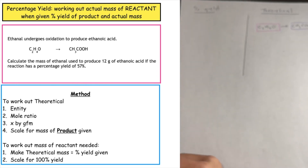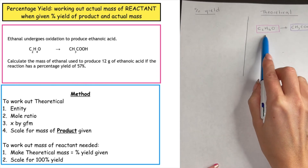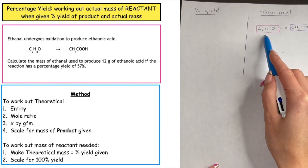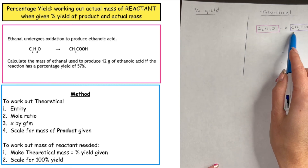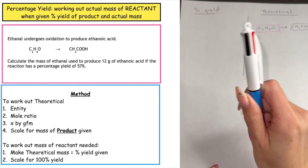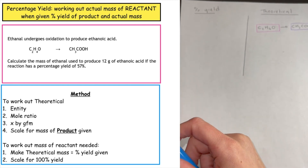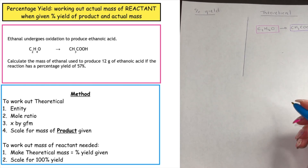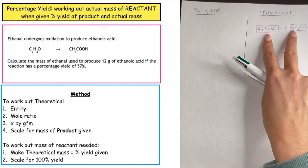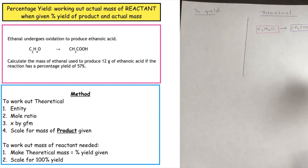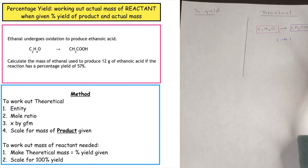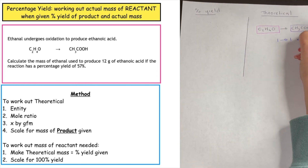In this question we have ethanol as our reactant and ethanoic acid as our product. The question asks us to calculate the mass of ethanol required to produce 12 grams of ethanoic acid if the reaction had a percentage yield of 57%. The first thing we want to do is work out the theoretical yield, so we take out our entities — ethanol and ethanoic acid — do our mole ratio, which is one to one, and times through by the GFM because we're working with mass.